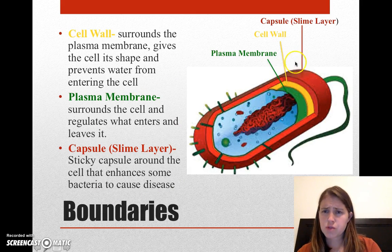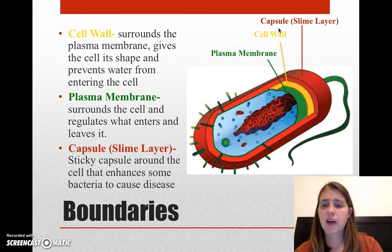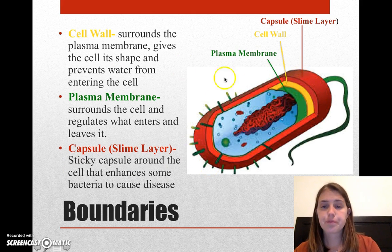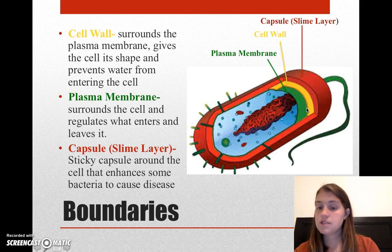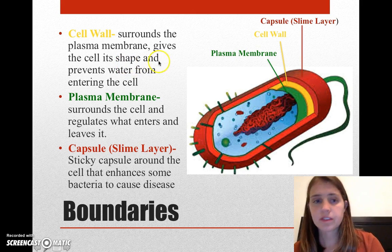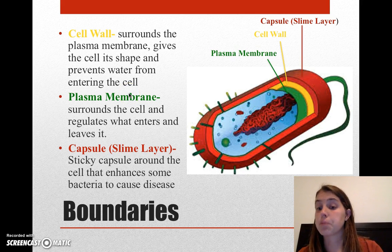Let's talk about the structure. This red part that surrounds the entire cell — notice how thick it is — that's the capsule. Bacteria have capsules or slime layers. This is a sticky layer around the cell that allows it to cause disease. When you get sick and have a bacterial infection, it's this slime layer that initially causes the infection. Right inside the slime layer, we have our cell wall, which is similar to the cell wall in plant cells. It surrounds the plasma membrane, gives the cell its shape, and prevents water from entering unnecessarily — basically stopping the cell from bursting.